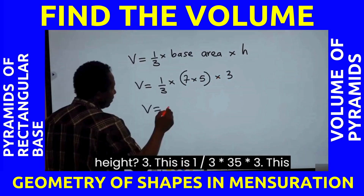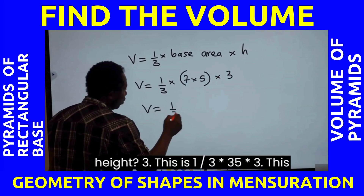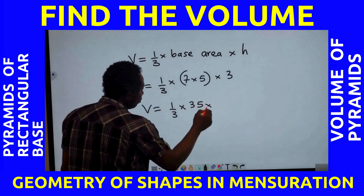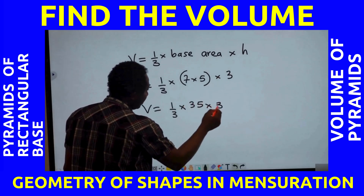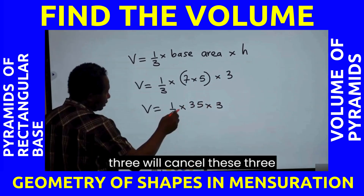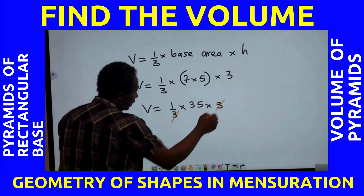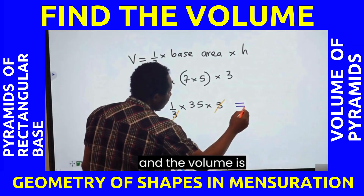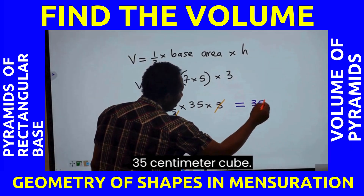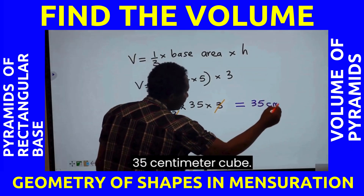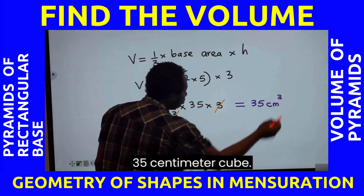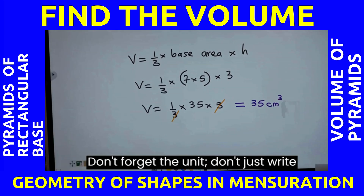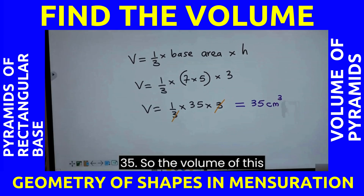3. This is 1 over 3 times 35 multiplied by 3. We'll cancel these 3s, and the volume is 35 cm³. Don't forget the unit — don't just write 35. So the volume of this pyramid is 35 cm³.